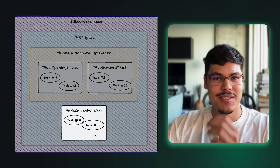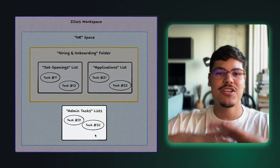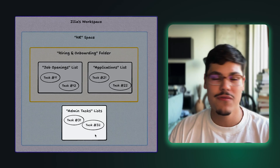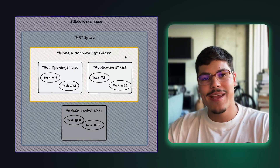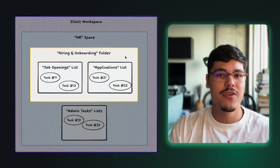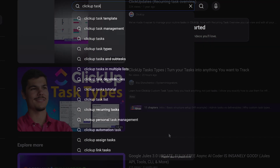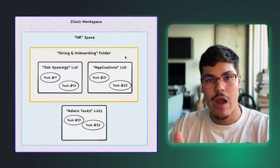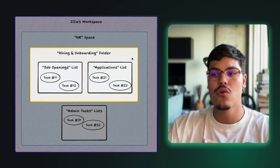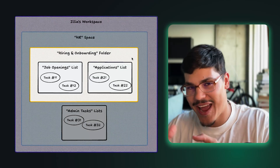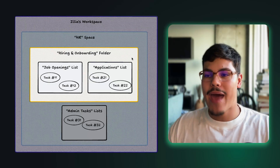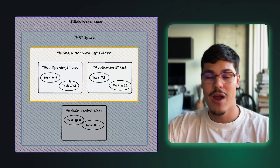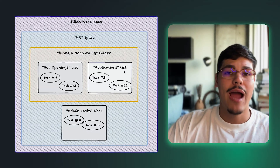First I have my admin tasks list — these are all the HR tasks that I created for myself or someone created for me. I also have a hiring and onboarding folder where, instead of tracking actual action items, we're tracking deliverables we want to manage throughout the hiring and onboarding process, which are going to be our job openings and our applications.